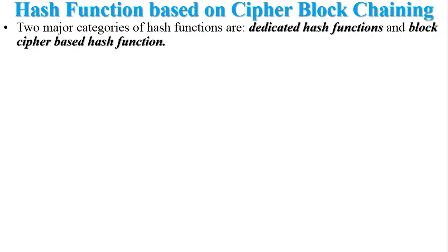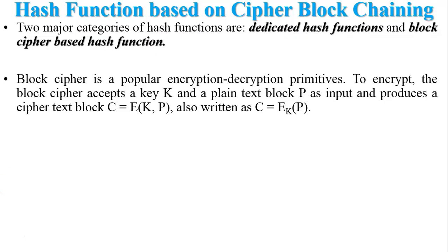Before discussing hash function based on cipher block chaining, we are going to discuss about the cipher block chaining mode. Block cipher is a popular encryption-decryption primitive. To encrypt, the block cipher accepts a key k and plain text block p as input and produces a cipher text block c, equal to the encryption of plain text using the symmetric key k. Also written as c = Ek(p).